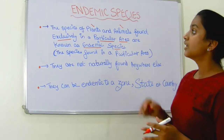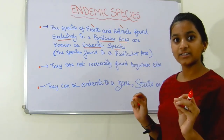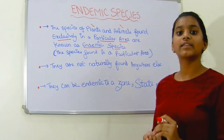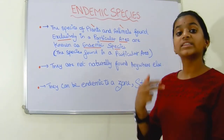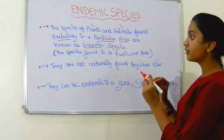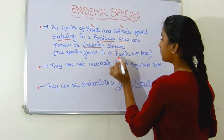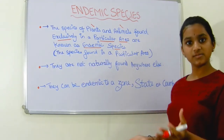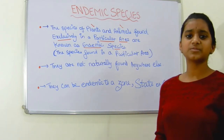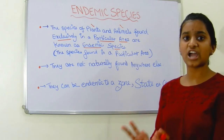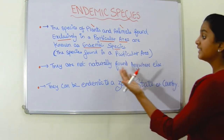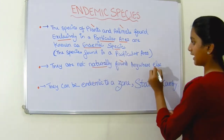So the species found in a particular area are called endemic species. They are not naturally found anywhere else.